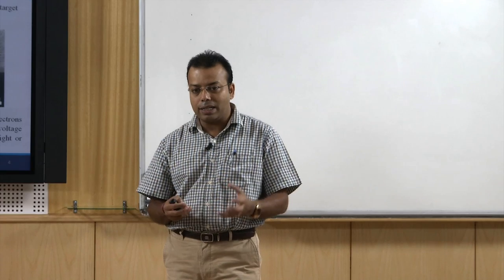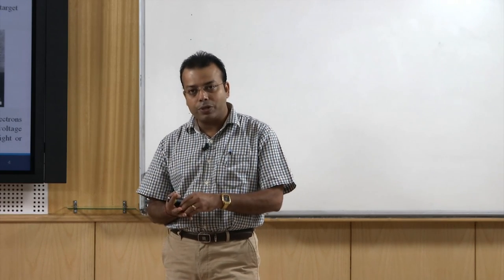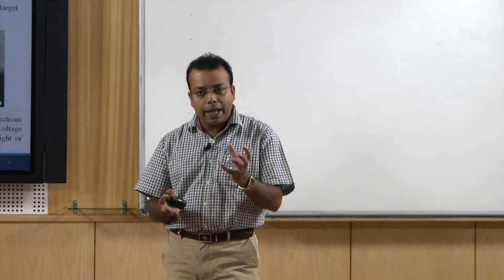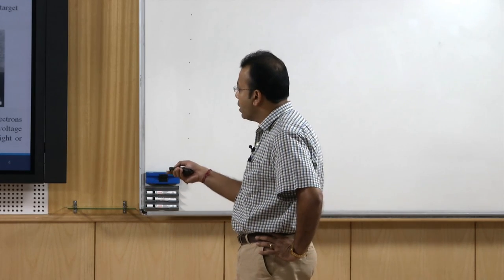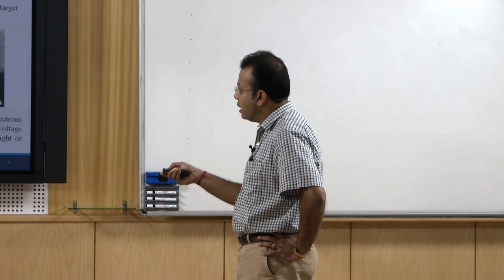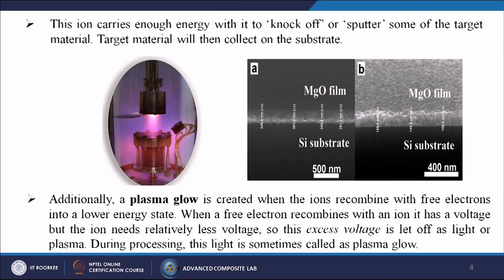Some argon-plus ions hit the substrate; the leftover argon ions absorb electrons and return to a free electron lower energy state. When a free electron recombines with an ion, it has a voltage but the ion needs relatively less voltage. This excess voltage is let off as light or plasma, which is known as plasma glow during processing.